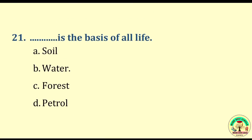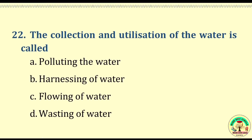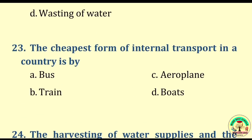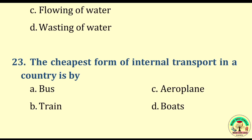Question number twenty-one: Dash is the basis of all life — soil, water, forest, or petrol. The right answer is water. Question number twenty-two: The collection and utilization of water is called — polluting the water, harnessing of water, or flowing of water. The right answer is harnessing of water. Question number twenty-three: The cheapest form of internal transport in a country is by — bus, train, aeroplane, or boats. The right answer is boats.